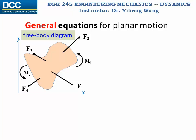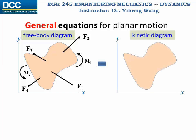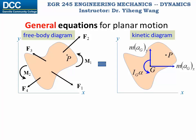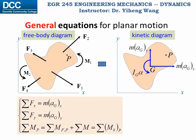Let's first review the general equations of motion for planar motion that we studied previously. For an object subjected to multiple forces and couple moments within the established coordinate system, it undergoes general plane motion, which is a combination of translations within this plane and rotation about an axis perpendicular to this plane. From the free body diagram, we can summarize all the external forces acting on this object, summarize the moment with respect to an arbitrary point P, and write a set of equations of motion.